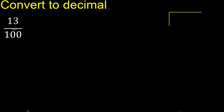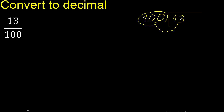13 divided by 100. 13 is less than 100, therefore complete — always complete with 0 here — 0 point.